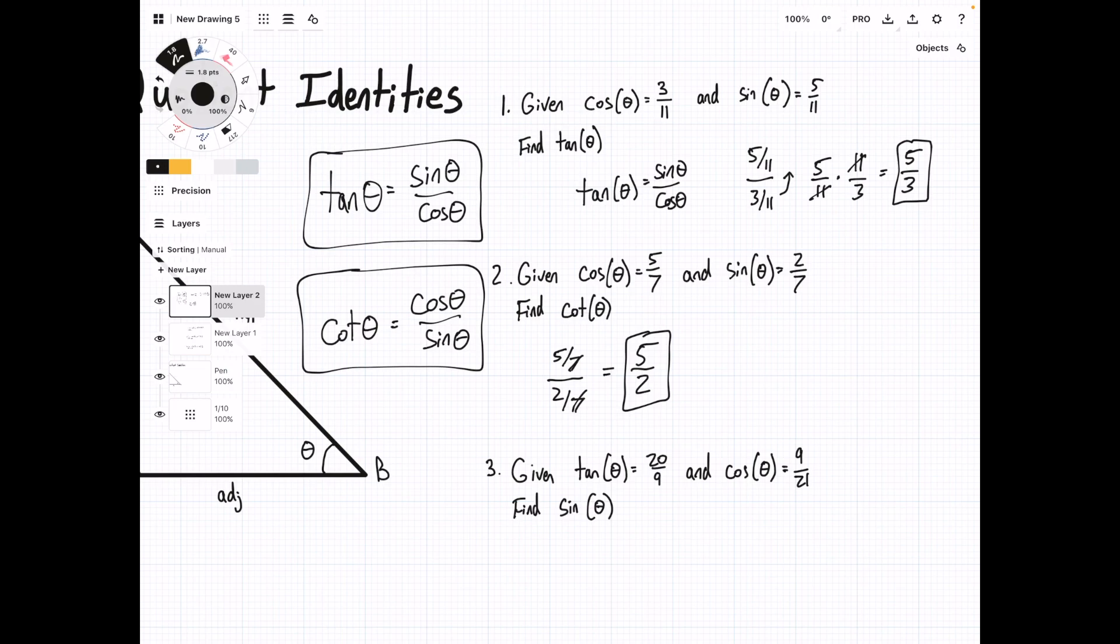The last problem tries to be a little trickier, but it's really just a couple extra steps. In this case, we have tan θ equals 20/9, and we know that tan θ equals sin θ over cos θ. We're given cos θ equals 9/21, so we'll plug that in.